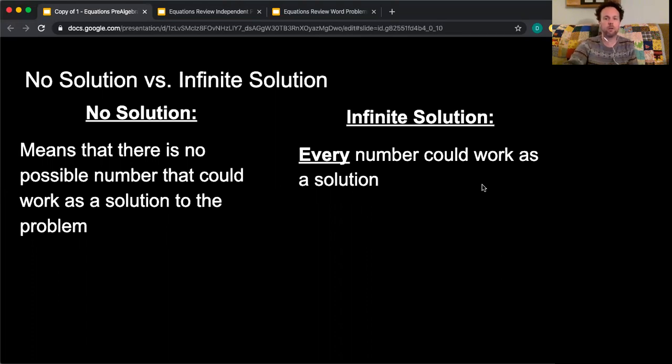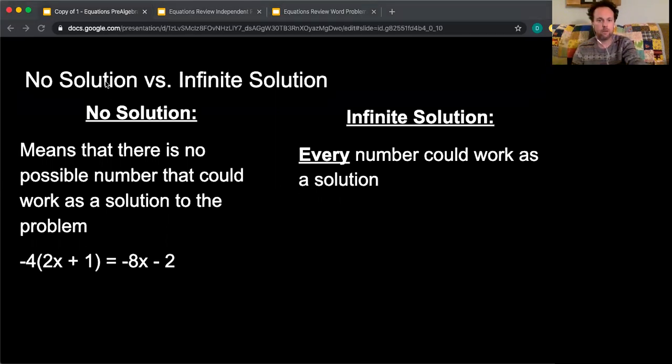So an example of no solution. Let's take a look at this. Let me get my little draw tool out right here. So I have -4 times the quantity 2x + 1 equals -8x - 2. Now, I'm going to go through my steps to solve this to show you that this will not have any kind of solution.